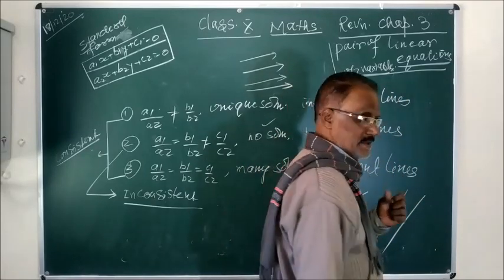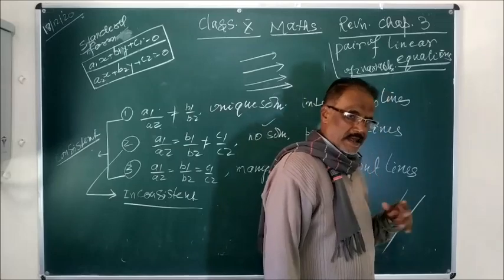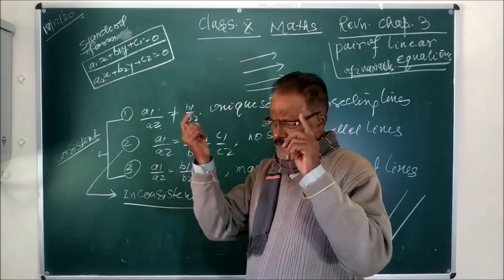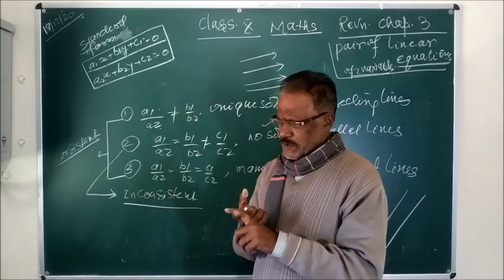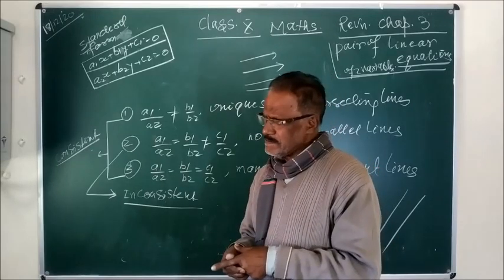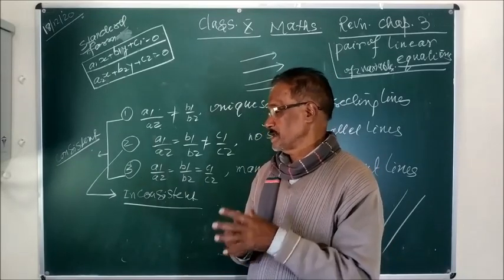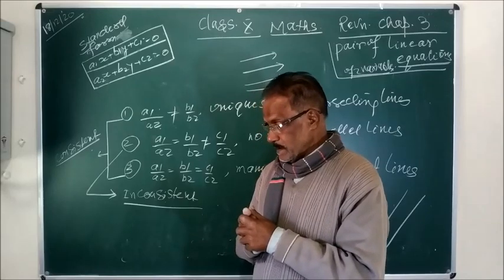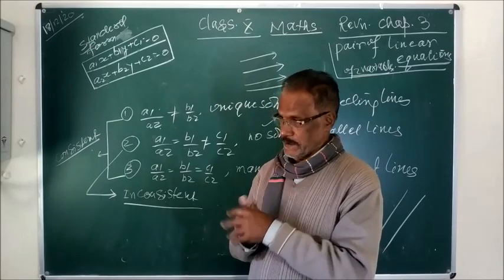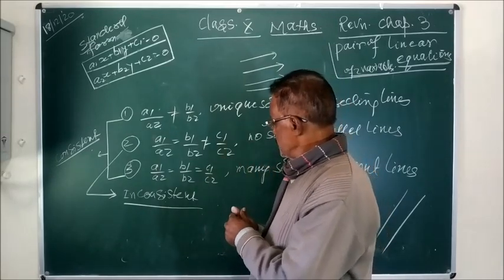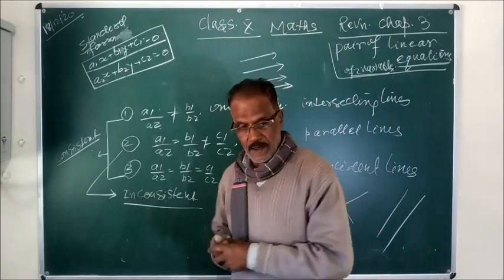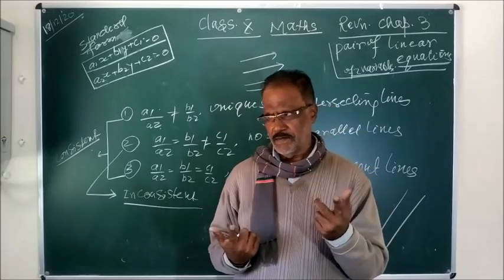Parallel lines will not intersect, and therefore there will be no solution. Because if the two lines representing two equations intersect, then the equations must have a solution — you can find the values of x and y. And if the lines are parallel, they are not intersecting, and therefore there is no solution.